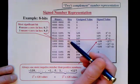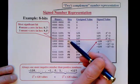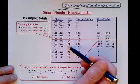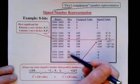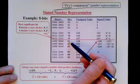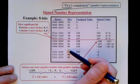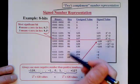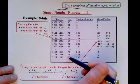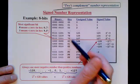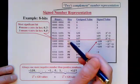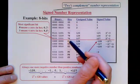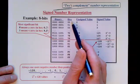If you're looking at a hex representation, the leading hex digit tells you whether the number is negative. If it's 8, 9, A, B, C, D, E, or F, then it's a negative number. If it's 0 through 7, then it's a positive number or zero.